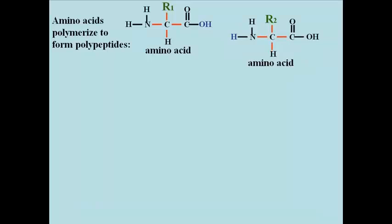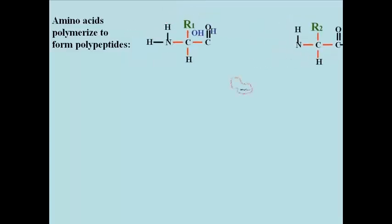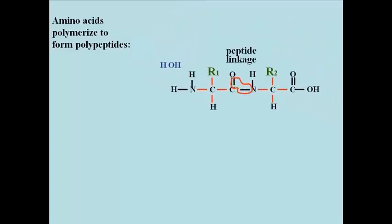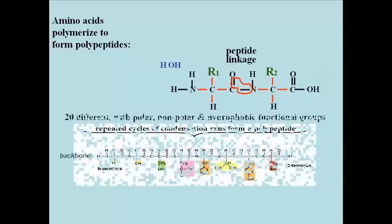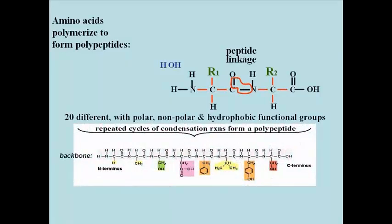The next group of true polymers formed by dehydration synthesis reactions that we'll review are proteins, or more correctly, polypeptides. The amino acid monomers shown here will lose a water molecule when they form a peptide linkage, as shown here. Repetitive condensation reactions will add more amino acids to the dimer to form a polypeptide such as the one shown at the bottom of the slide.